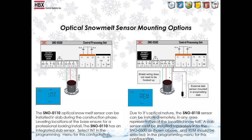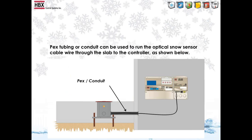When installing the snow sensor, make sure you are choosing the correct setting. If you are installing it in the slab, you would choose INT. If remote mounting the sensor, make sure you choose REM for remote mount. This slide shows that you run the cable from the snowmelt sensor to the snow control, and that cable can be run through a conduit.